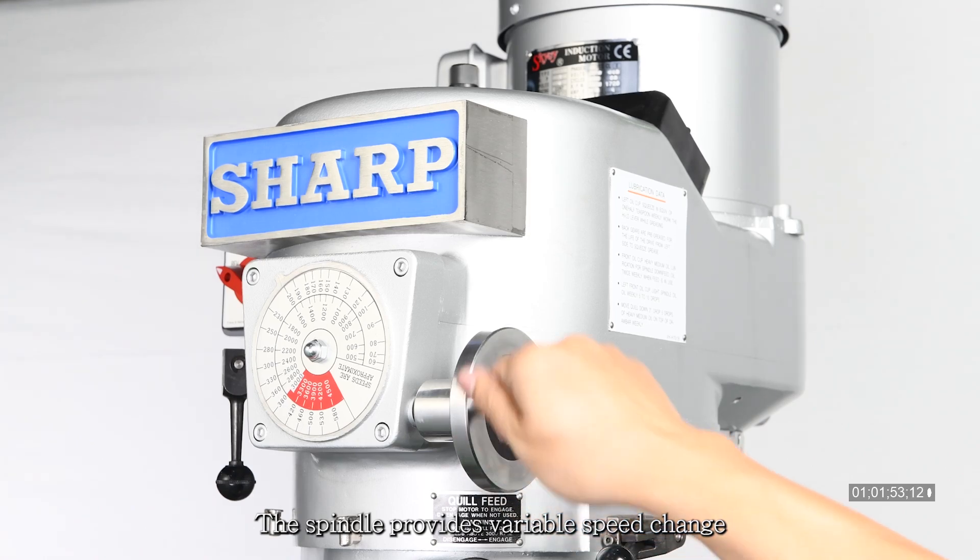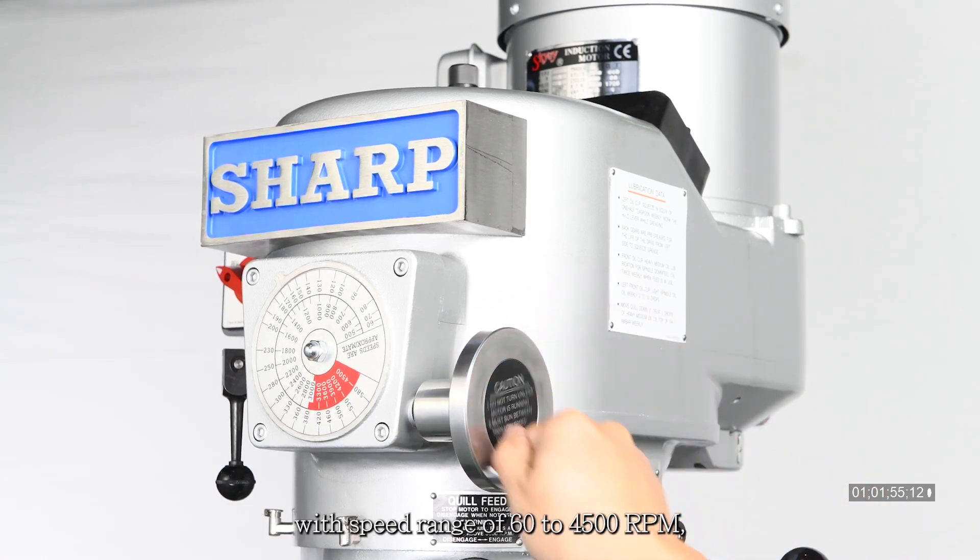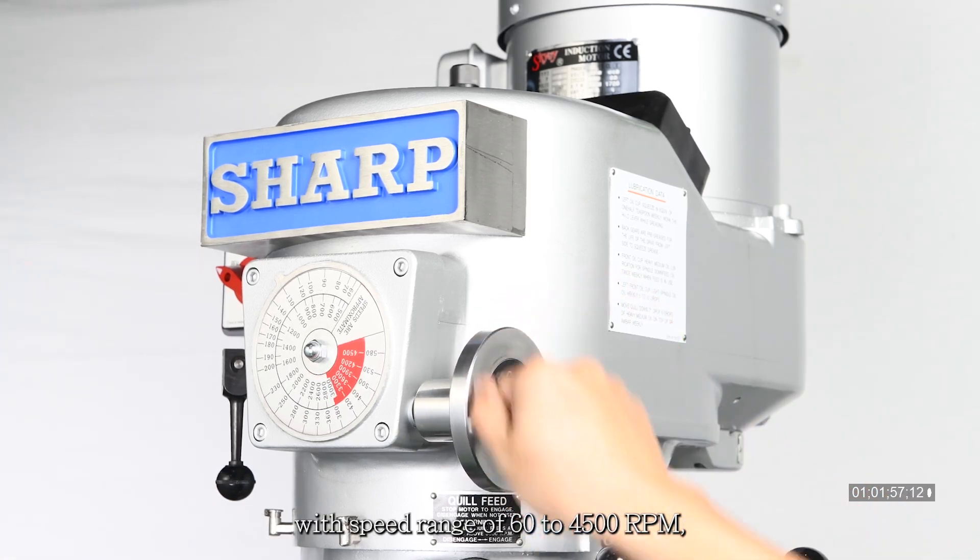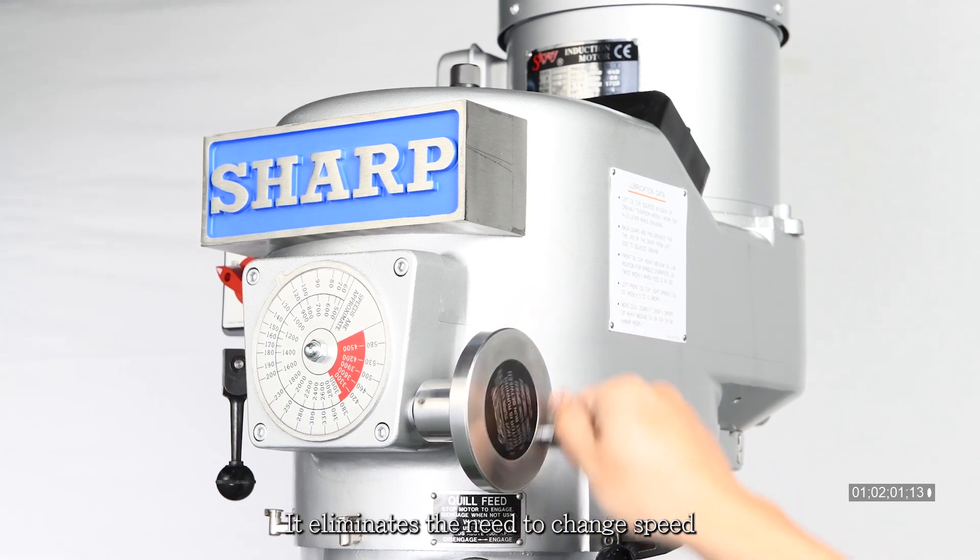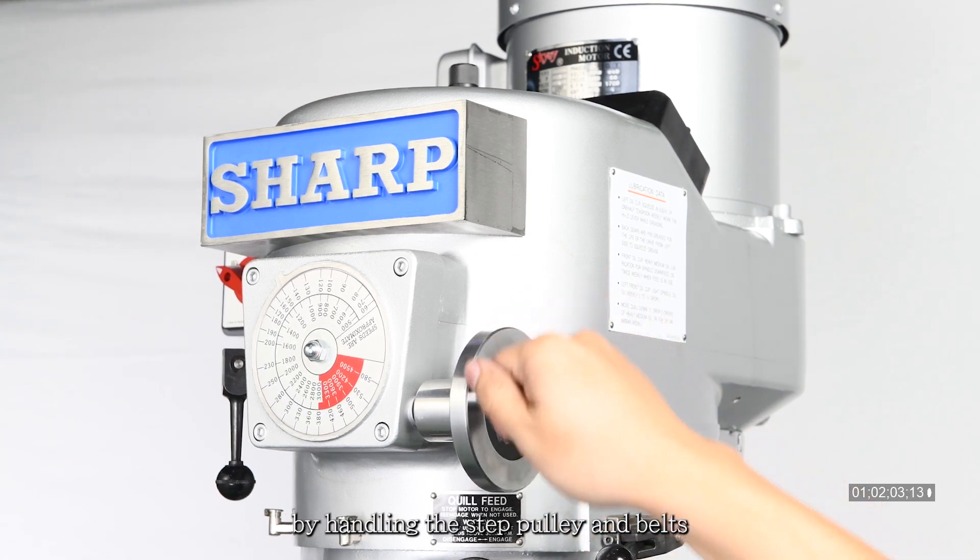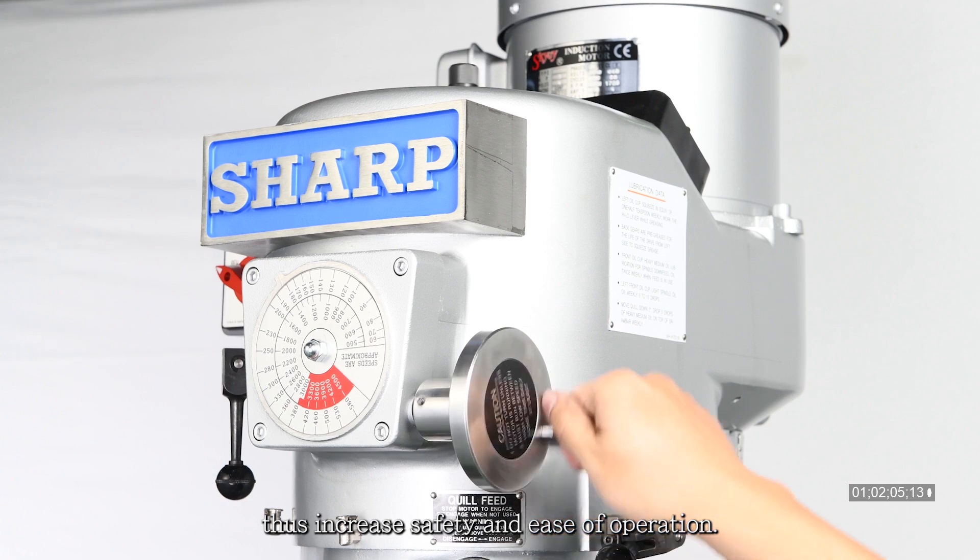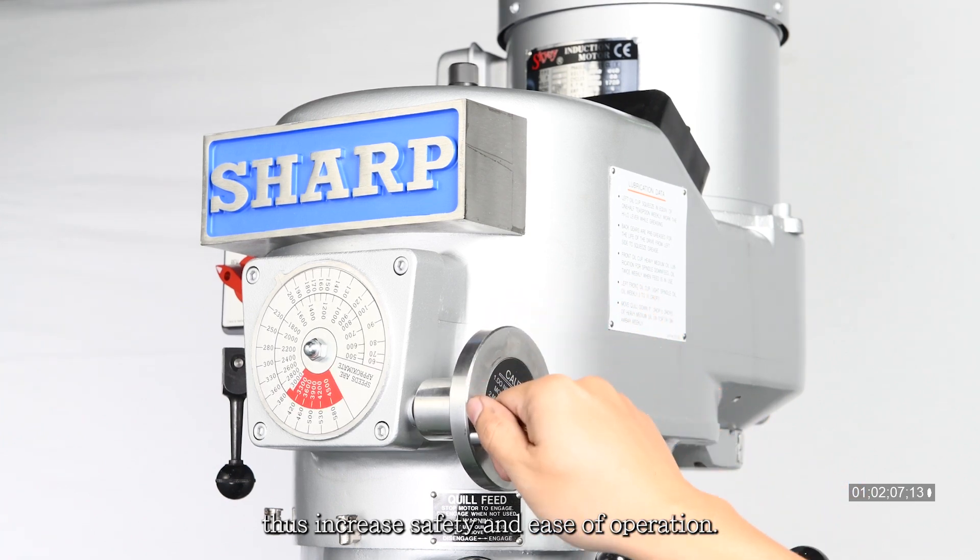The spindle provides variable speed change with a speed range of 60 to 4500 RPM. It eliminates the need to change the speed by handling the step pulley and belts, thus increasing safety and ease of operation.